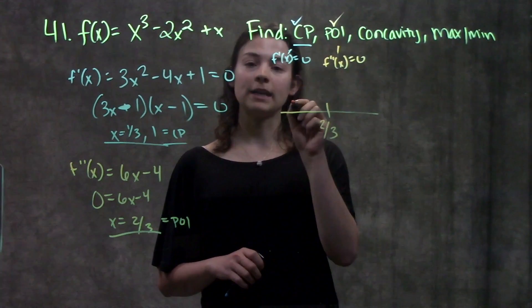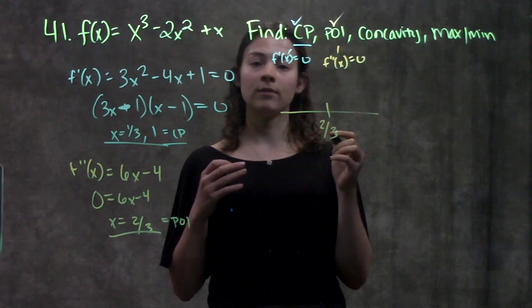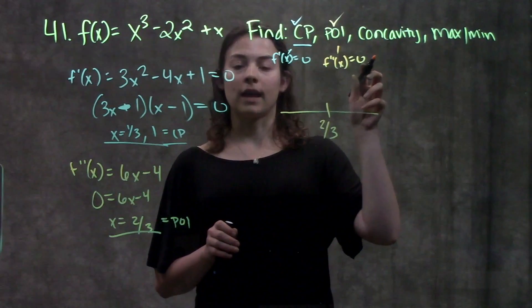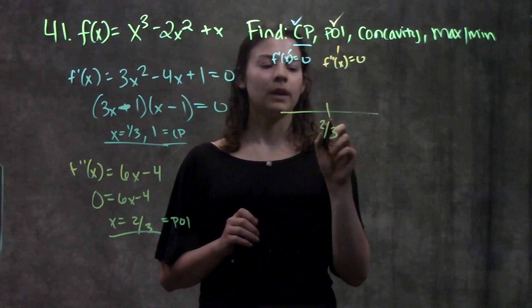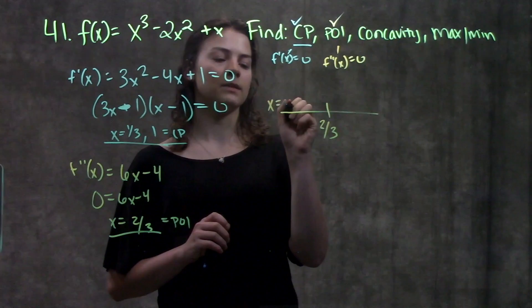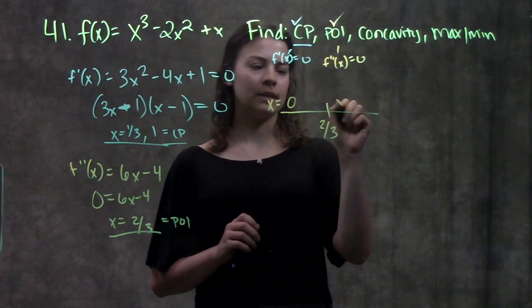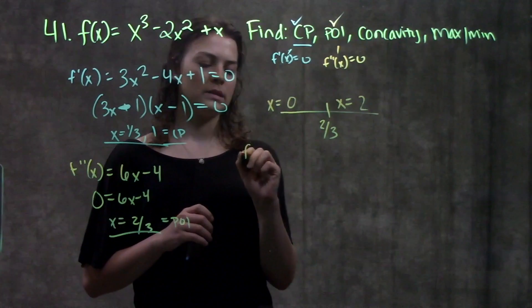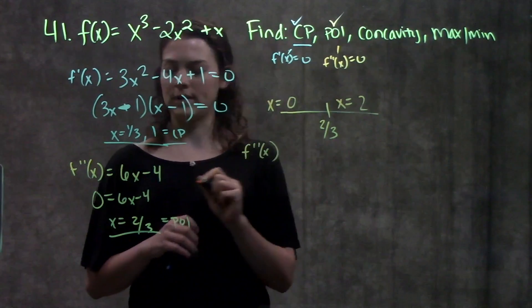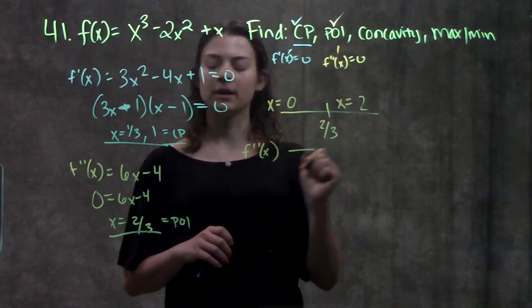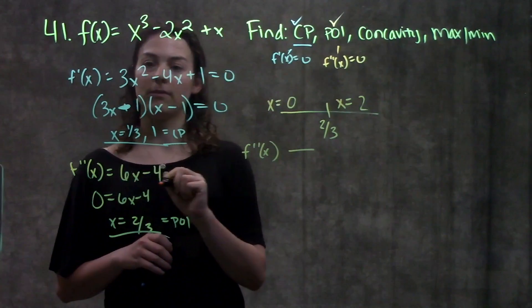And now I'm going to put in test points on either side of my point of inflection into my second derivative to determine the concavity of my original function. So 2 thirds is my point of inflection. I can have a test point x equals 0 and x equals 2. Remember, I'm only worried about the sign. So when I plug 0 into my second derivative, I get 0 minus 4. This will be negative. And when I plug 2 into my second derivative, I get 12 minus 4. That'll be positive.